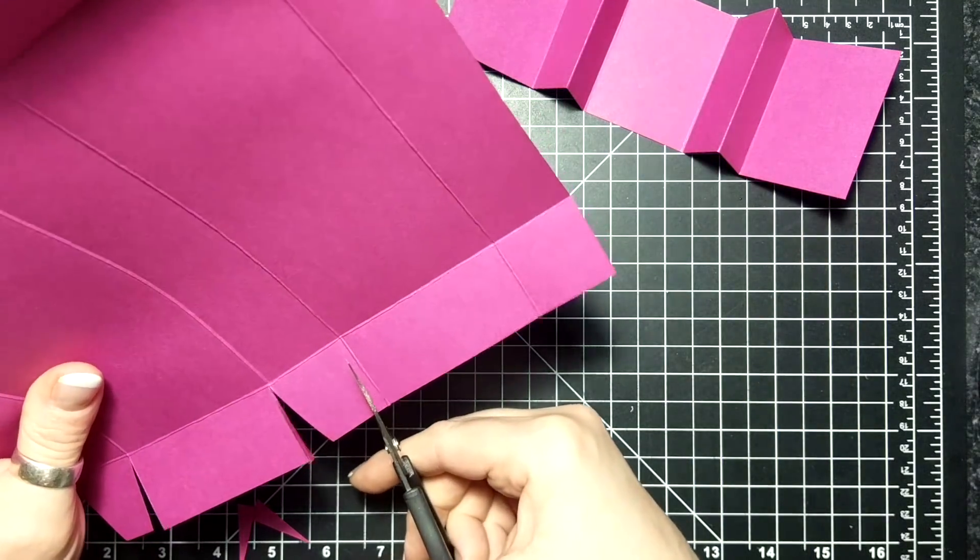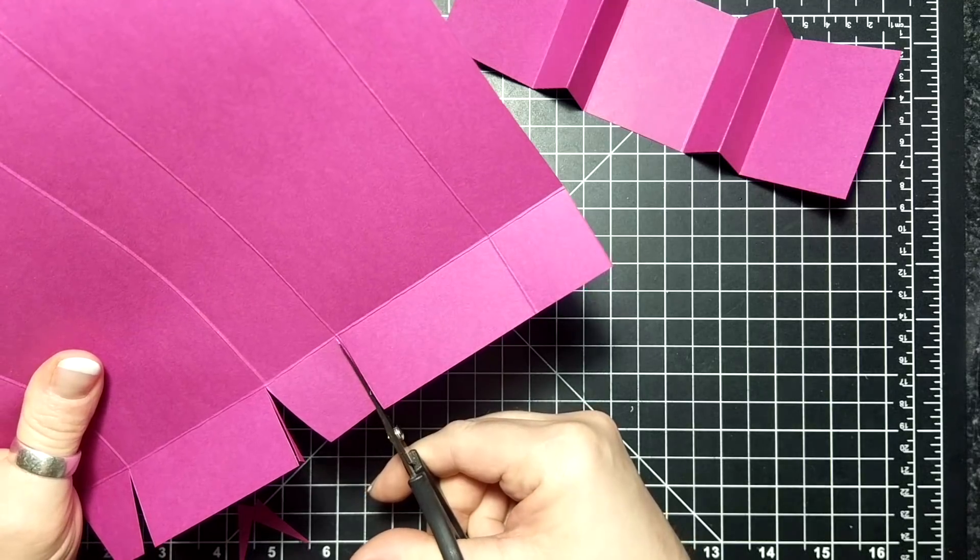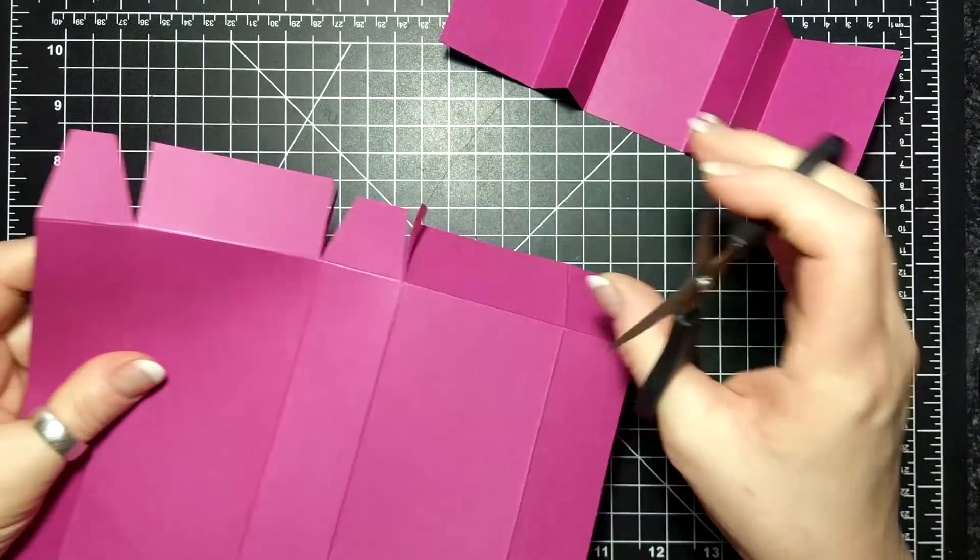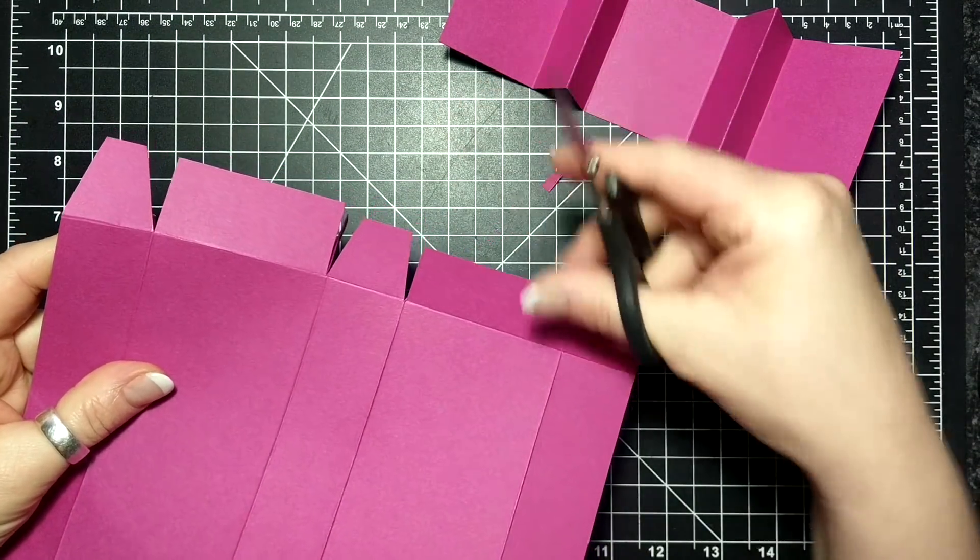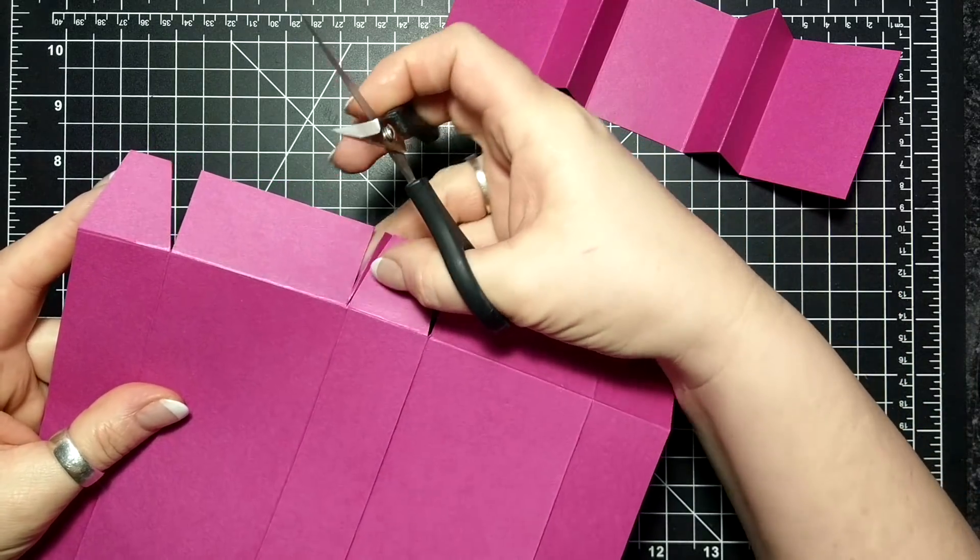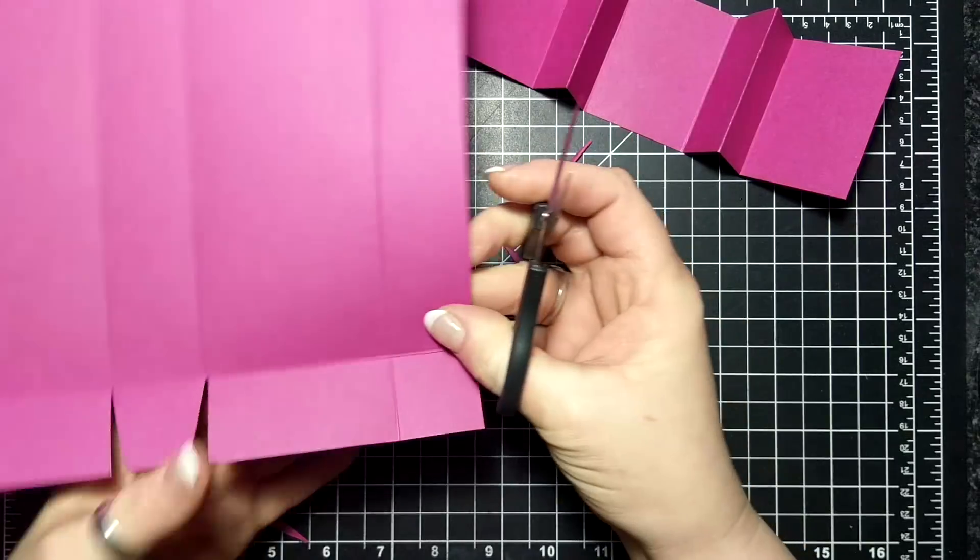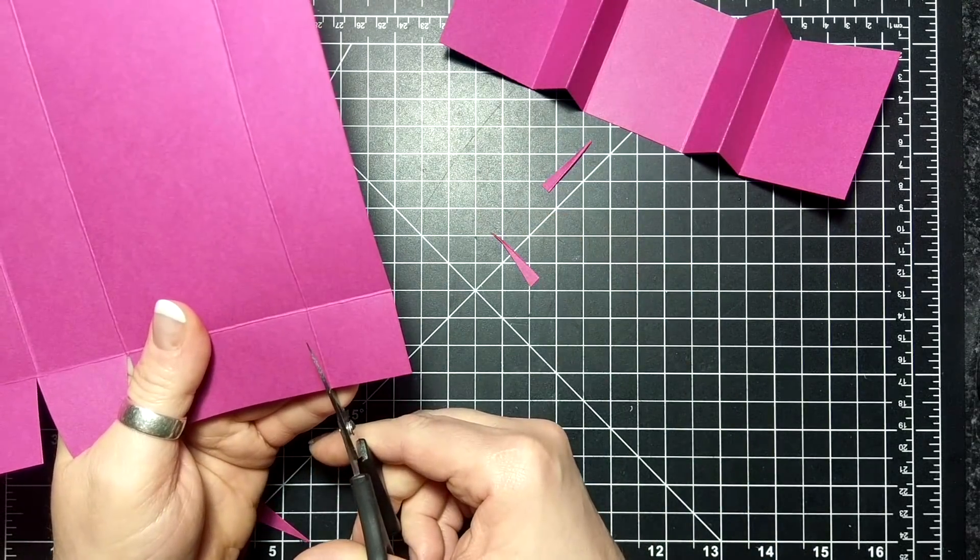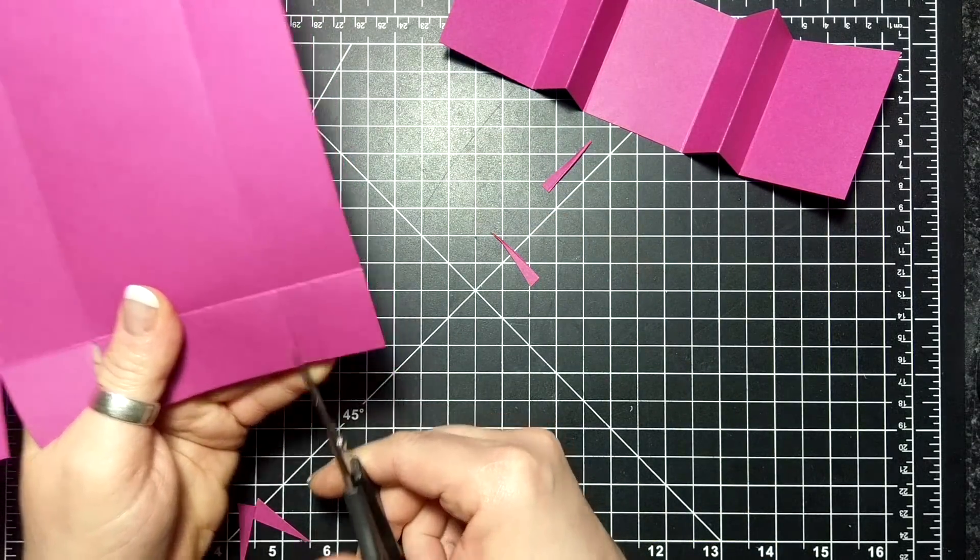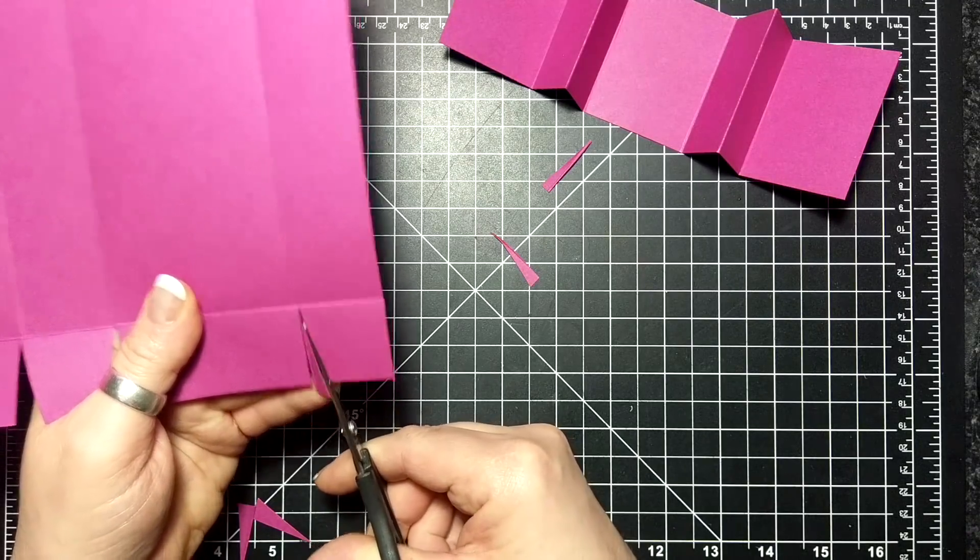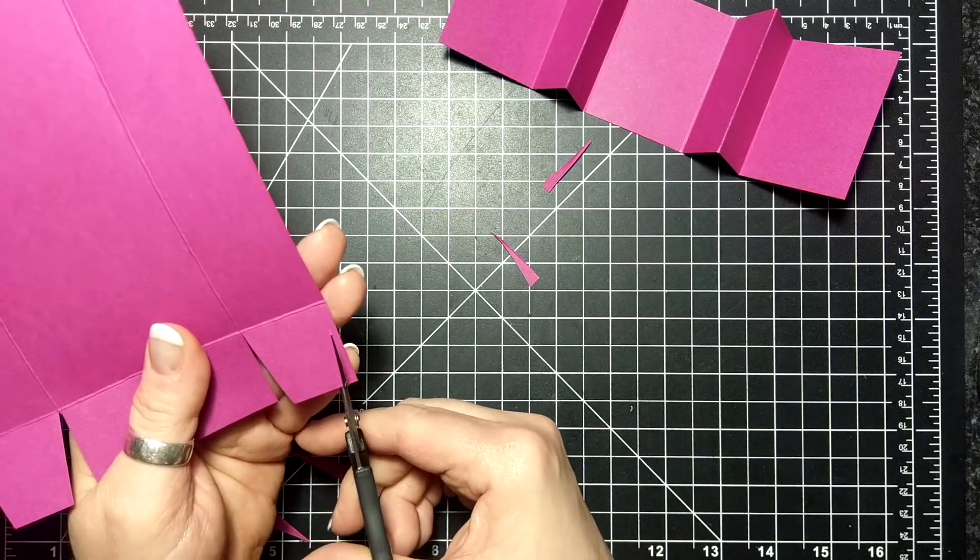One of the things that I did notice when I wedge those out is that when you pull that little piece out there's a little fluffy hair, and it does kind of ruin the smoothness of the box. So when you do wedge out, try to actually cut it out, not pull it out.